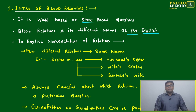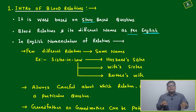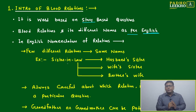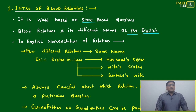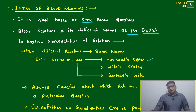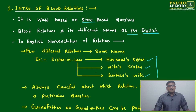One clue point: the question will usually indicate maternal or paternal side. Sometimes this clue is intentionally not given, so more than one option may be correct. In English nomenclature, several different relations share the same name — for instance, 'sister-in-law' can refer to husband's sister, wife's sister, or brother's wife — three different relations, one name.